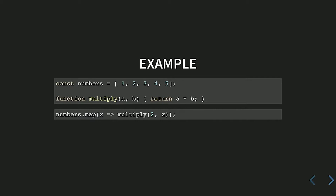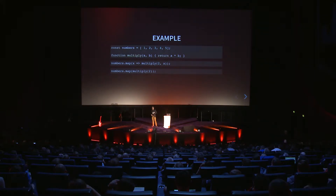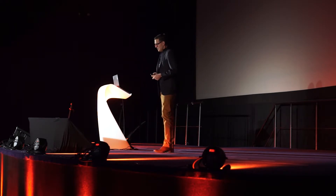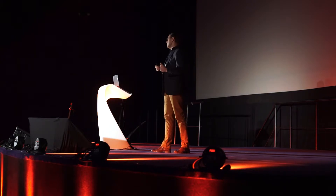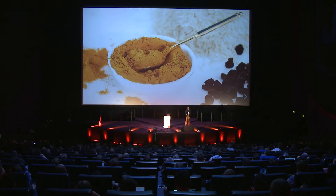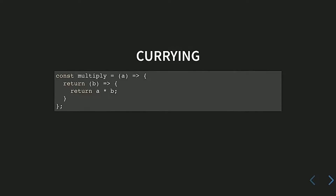We want to be point-free, and ideally we'd like to pass multiply directly. Of course, this won't work in JavaScript because multiply expects two arguments and we're only supplying one, so the second will be undefined. The missing ingredient is currying. In functional programming, every function is effectively a single-argument function. Currying was named after this guy — whose first name, by the way, is Haskell. Coincidence? Currying is about taking a multi-argument function and turning it into a chain of single-argument functions.